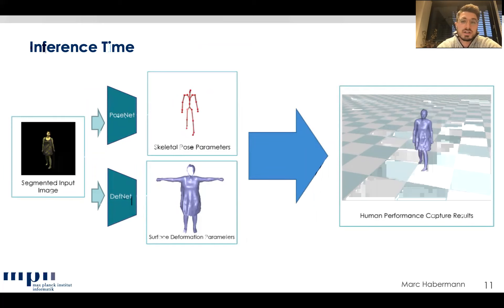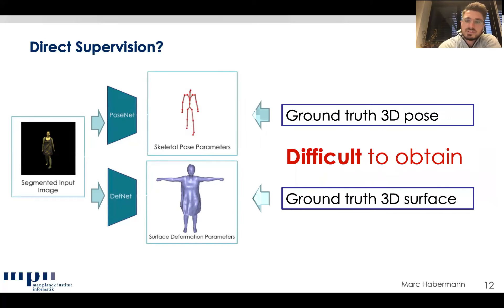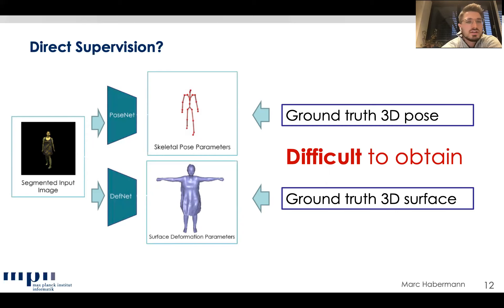The obvious question is how we train it. Directly supervising these networks is very difficult because obtaining ground-truth pose requires, for example, markerless multi-view capture methods. Obtaining ground-truth registered 3D geometry is also hard — you have to fit a template to multi-view RGB images or depth maps, which is a non-trivial process.